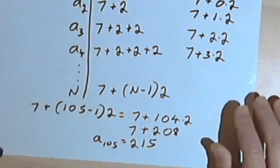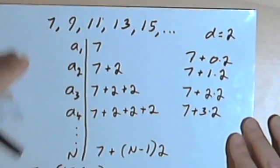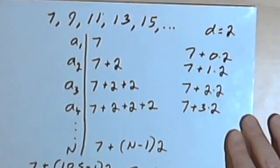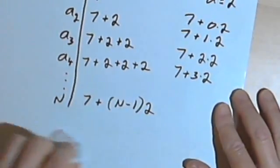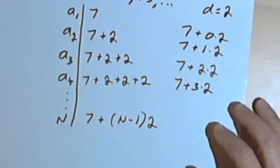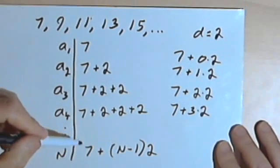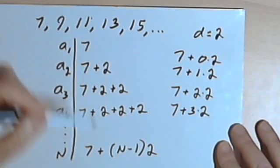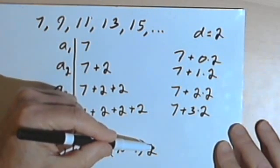So now that I've got a formula, now that I've got a way to find any term at all for this specific arithmetic sequence, let's see if we can extend that and find a formula for finding any term for any arithmetic sequence. So starting with the formula I have for this sequence, which was that the nth term is 7, which was actually the first term I used, a sub 1, plus n-1 times 2, which is the common difference.